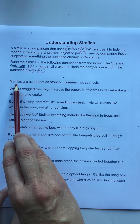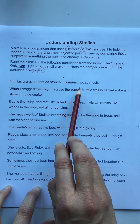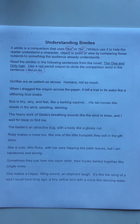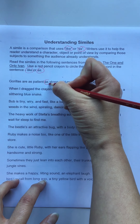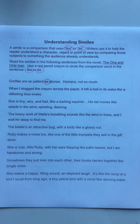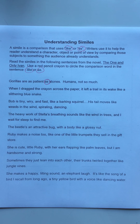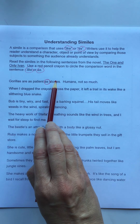Let's read the first line: 'Gorillas are as patient as stones. Humans, not so much.' Did you hear the comparison? Gorillas are being compared to stones. Now I want you to imagine a stone — it's just sitting there doing nothing. So when they say gorillas are as patient as stones, it means a gorilla can sit there doing nothing very patiently for a long period of time. Can humans do that? Not so much. I understand what gorillas are like based on what they're being compared to — stones.